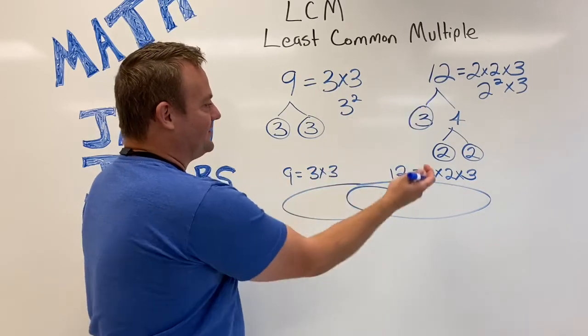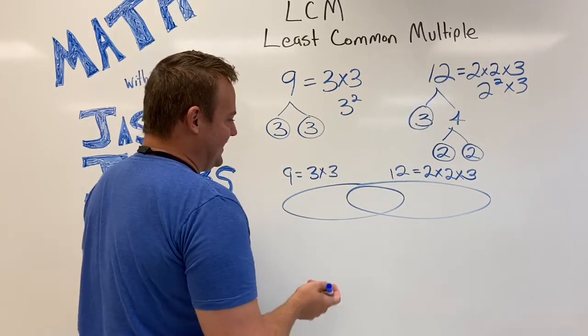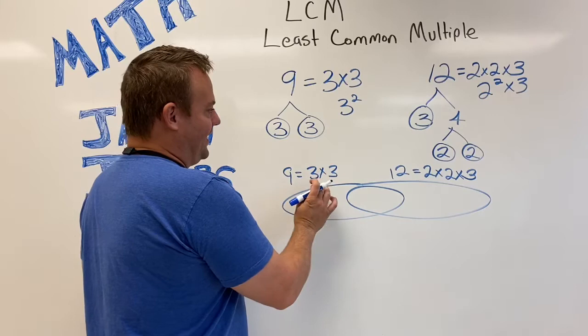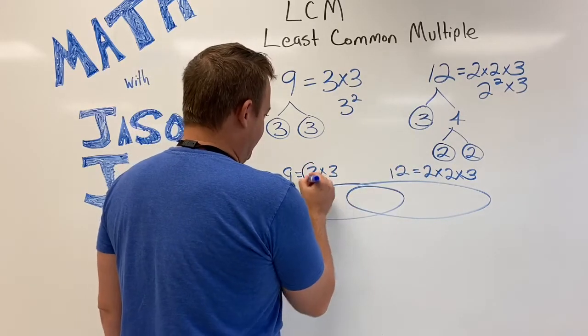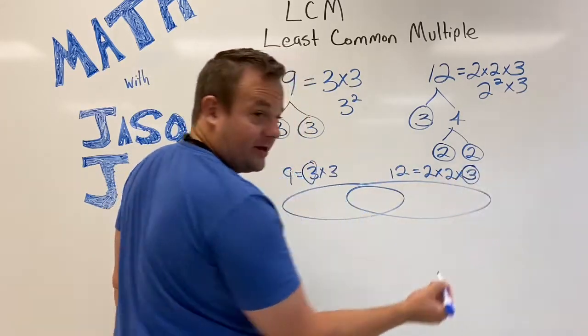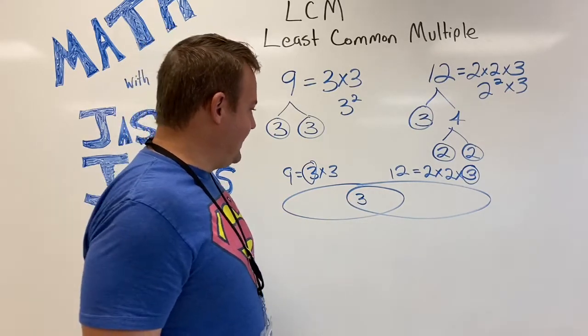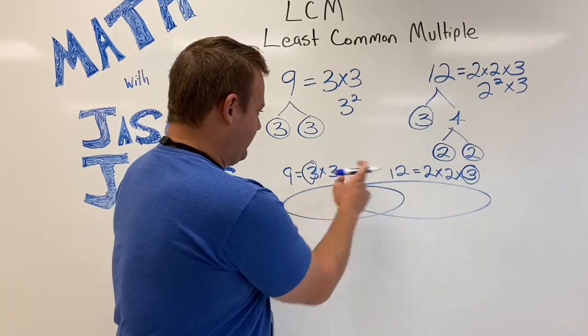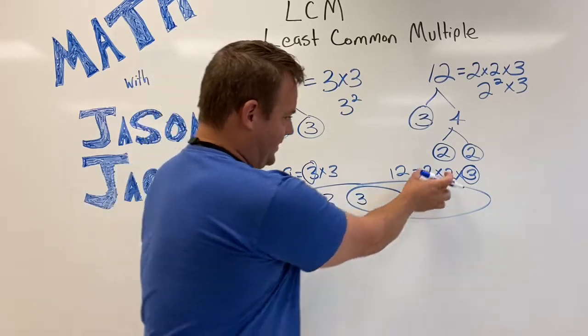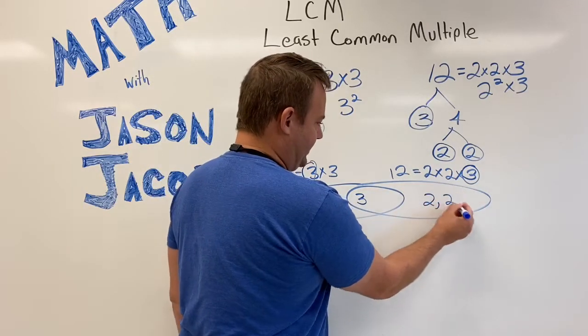We did the prime factorization, and now we see what do they have in common. So they both have a 3, so I'm going to circle that 3 and I'm going to put it in the middle like this. And now, no other 3, so this 3 that's not in common goes here, and then these 2s go here like this.